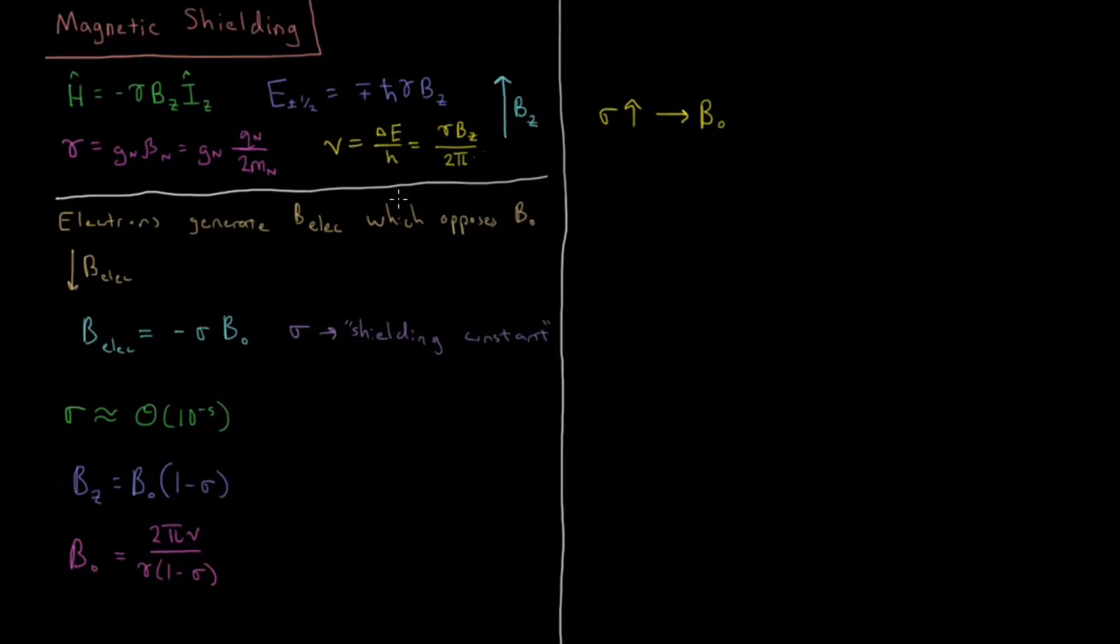As a nucleus gets more and more shielded, it takes a larger and larger external magnetic field in order to generate the resonance frequency. The resonance frequency gets higher as your shielding increases, because you have to increase the field strength higher and higher to account for the larger amount of magnetic field which is getting shielded away by the electrons.